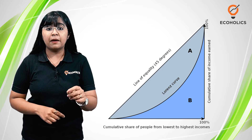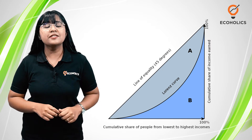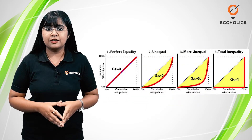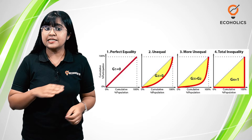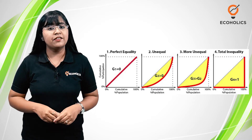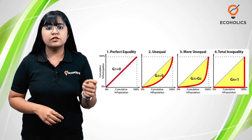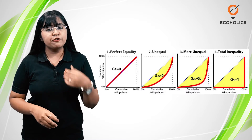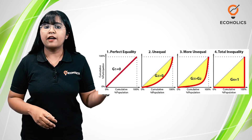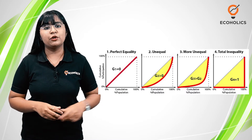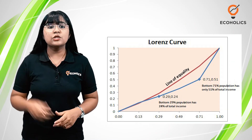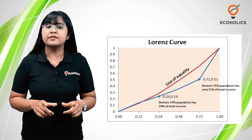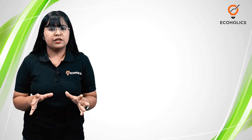This curve tells what proportion of the national income is earned by what percentage of households. Let us arrange the population of a country in ascending order of their incomes. The poorest households are located closer to the origin on the x-axis, and the richest households are farthest from the origin on the y-axis. We will plot the income share in percentage.